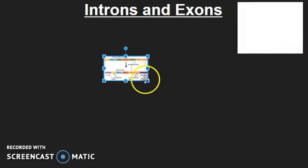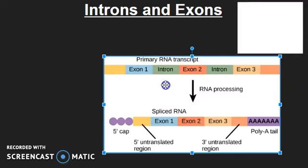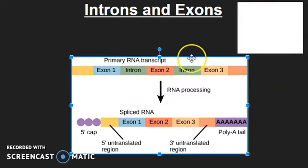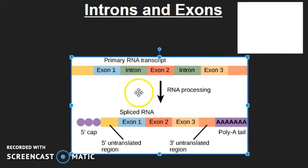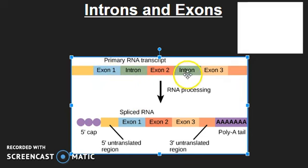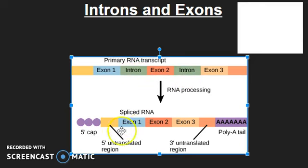Looking at this second image, it shows the same concept as the latter half of the previous picture. It shows a primary RNA transcript — the exact copy of the section of DNA with both exons and introns present. Once the RNA is processed, we get the final section of messenger RNA that's been spliced down. This version has all the introns removed, so only the exons remain in the final version.